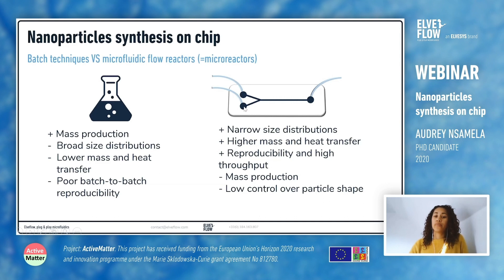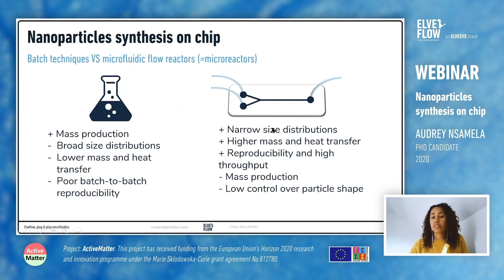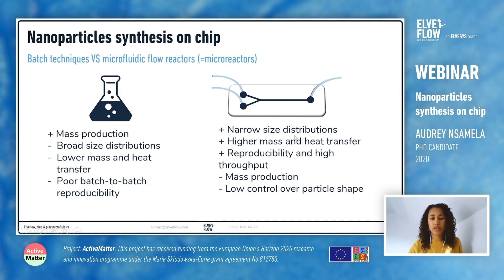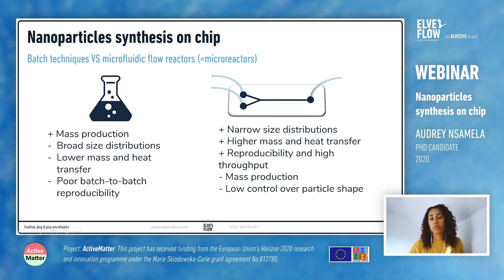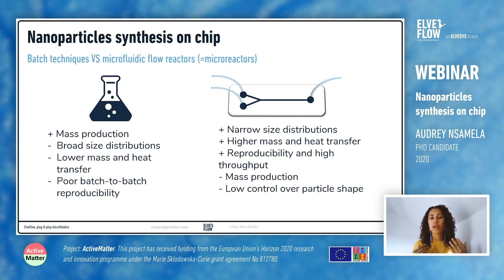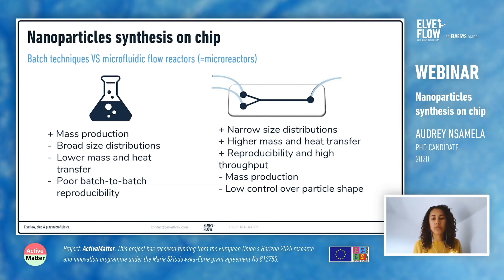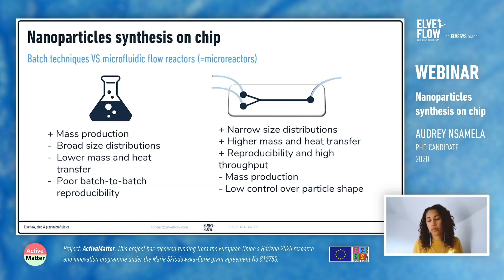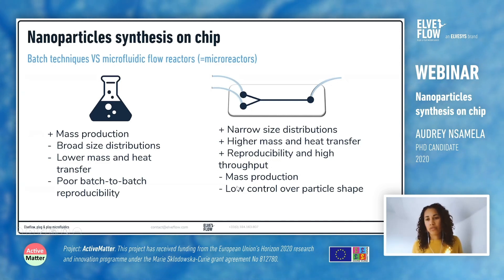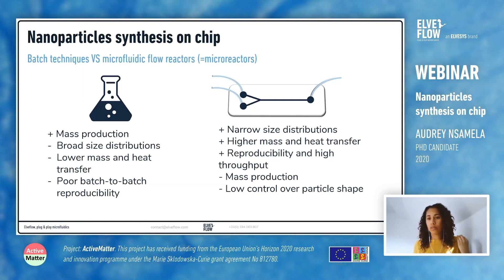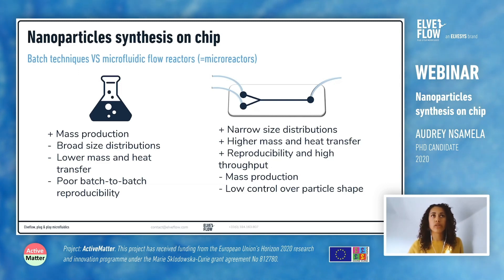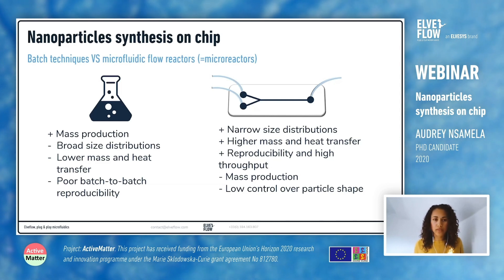Microfluidic flow reactors overcome many of these drawbacks: they provide narrow size distribution for your nanoparticles, higher mass and heat transfer, and along with better mixing in your solutions, that leads to higher reproducibility and high throughput. Although the drawback is that it's kind of difficult to mass produce nanoparticles with microfluidics, starting with the problem of mass producing the chips, as well as the production rate of nanoparticles on chip itself. The other drawback is that you have fairly low control over particle shape — with many microfluidic flow reactors you can produce spherical nanoparticles, but it's more difficult to produce other kinds of shapes, for example star-like nanoparticles, tubular, or square.